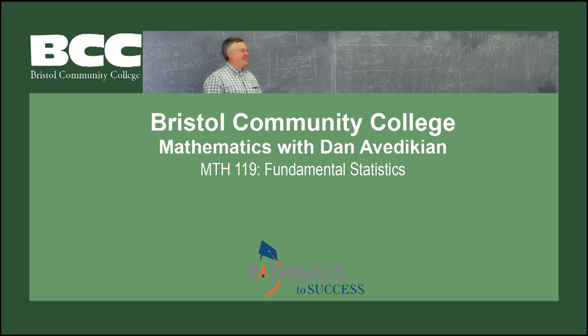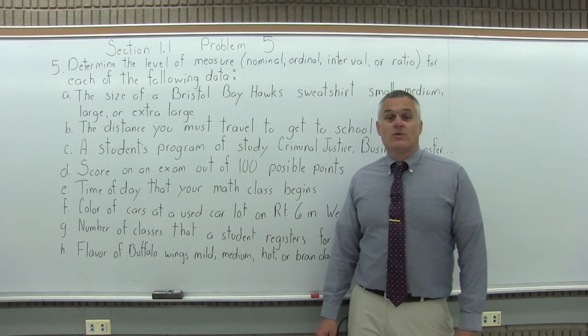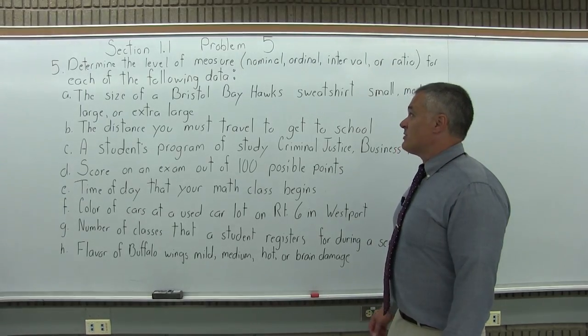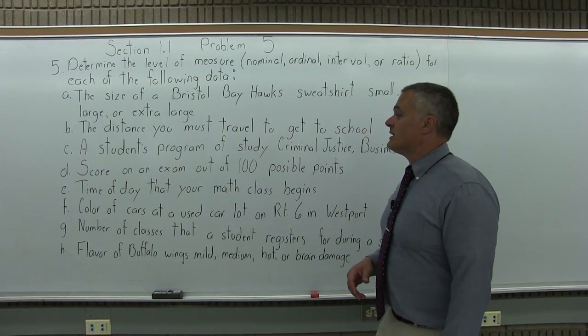Bristol Community College, Mathematics with Dan Avedikian, Math 119, Fundamental Statistics, Section 1.1, Problem 5. This is Section 1.1, Problem number 5. It says determine the level of measure, whether it's nominal, ordinal, interval, or ratio for each of the following data.